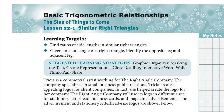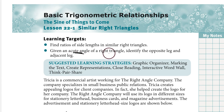This video is for Lesson 22-1 about similar right triangles. We're starting activity 22, which is about trigonometry. The learning goals are to make ratios of side lengths in similar right triangles, and when looking at the acute angle of a right triangle, figure out which side is the opposite leg and which side is the adjacent leg.